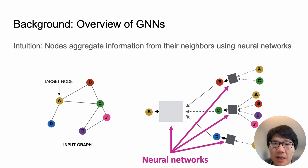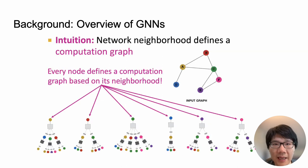First, let's start with some background on graph neural networks, or GNNs. The intuition behind GNNs is that nodes aggregate information from their neighbors using neural networks. The neighbors define the computation graph for each node, which means that different nodes may have different computation graphs.